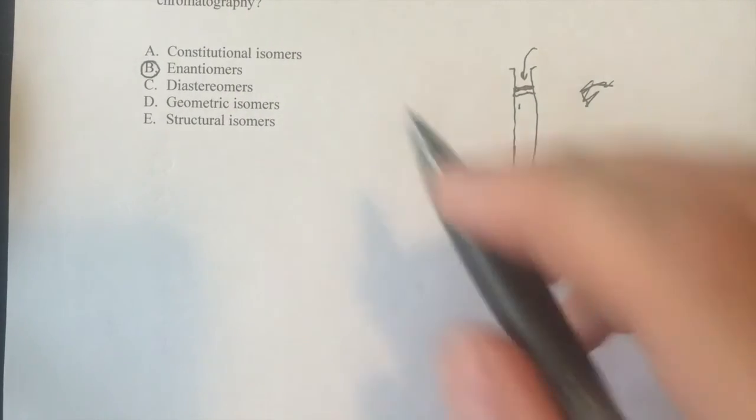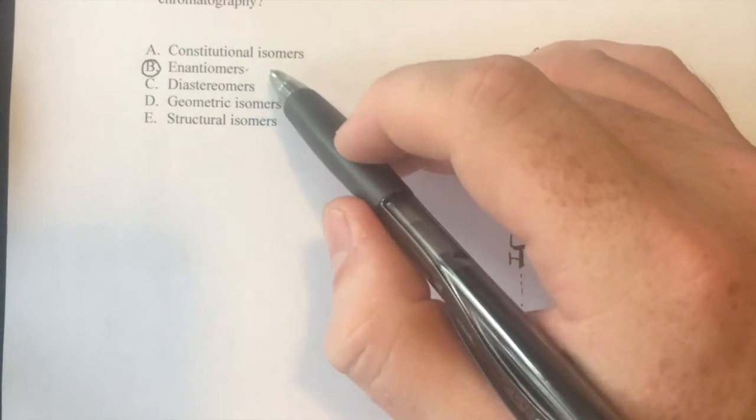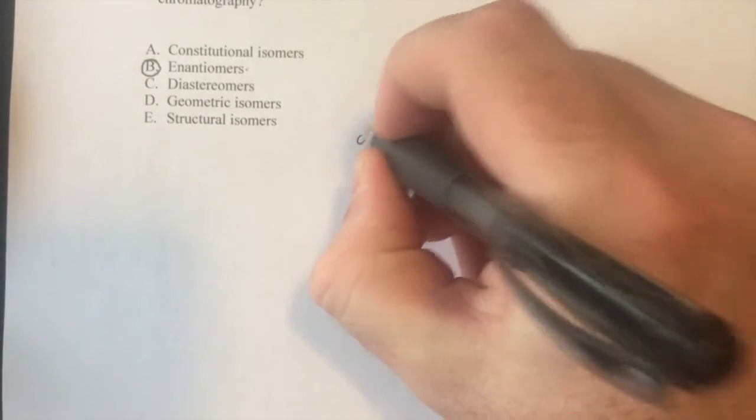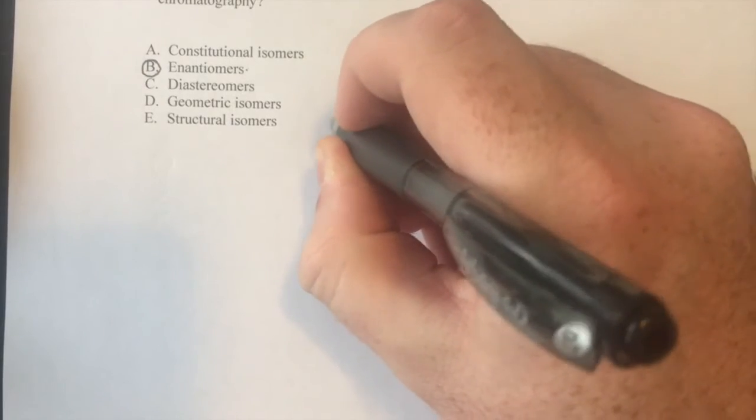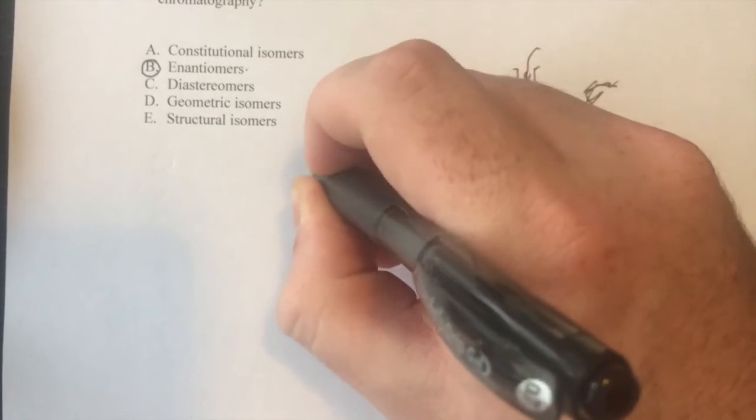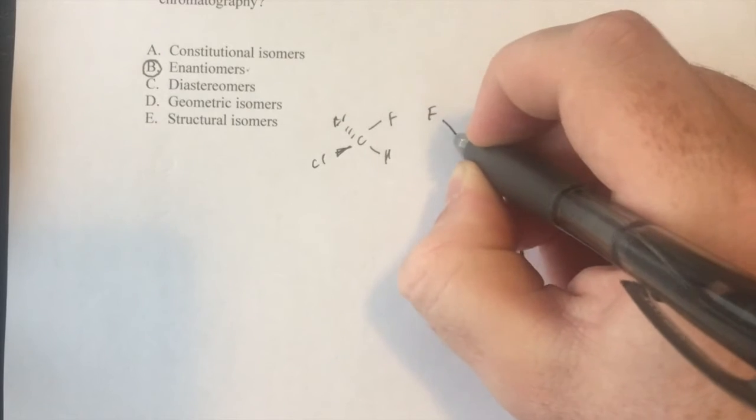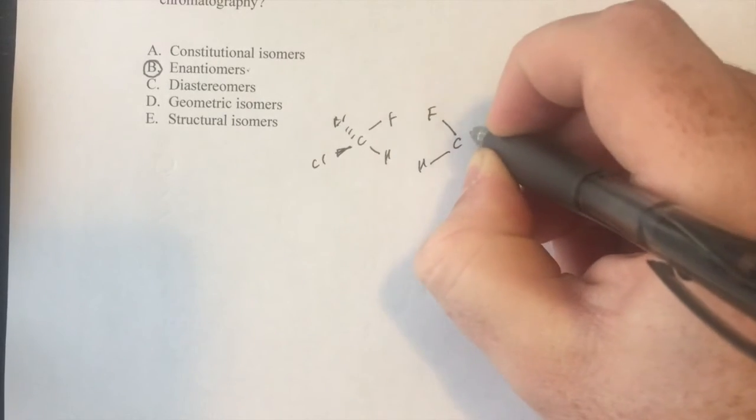And that is that if two compounds are non-superimposable mirror images, right, so say you have this guy, hydrogen, fluorine, bromine, and chlorine, okay, versus this compound, which is just the mirror image of it.